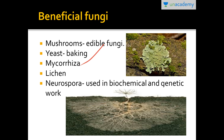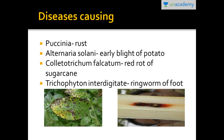Lichens are a symbiotic association between algae and fungus. Mycorrhizae is a symbiotic association between fungus and the roots of higher plants. In both symbiotic associations, both partners get benefited — one provides shelter and the other provides food. Neurospora is also used in biochemical and genetic work.